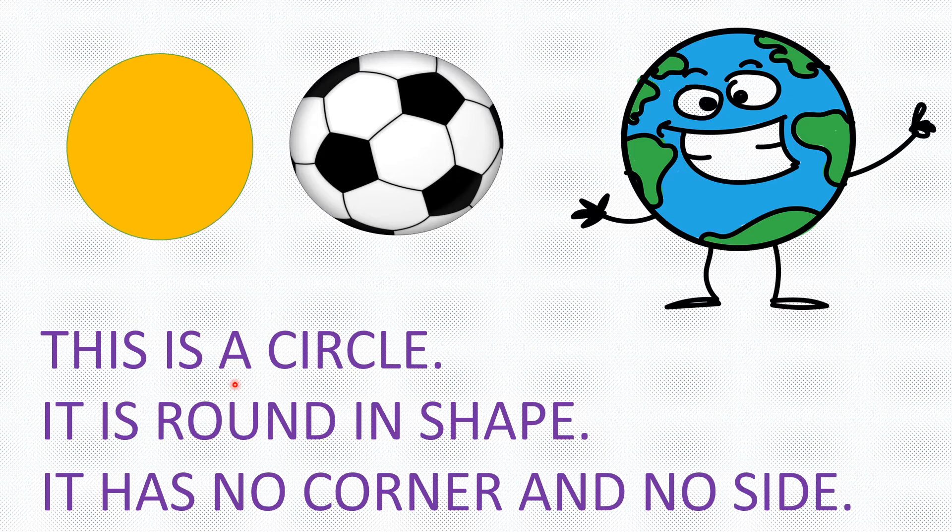This is a circle. It is round in shape. It has no corner and no sides. Circle, ball and earth. The shapes are the same. Circle, as you can see, round. There is no corner and no sides. Round.